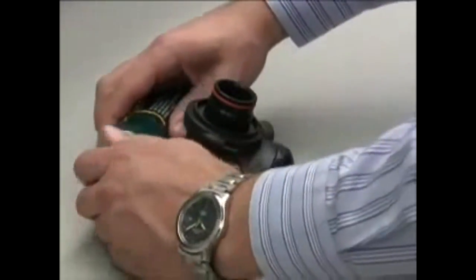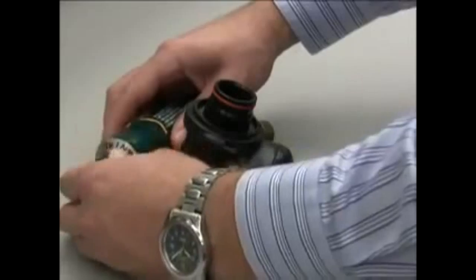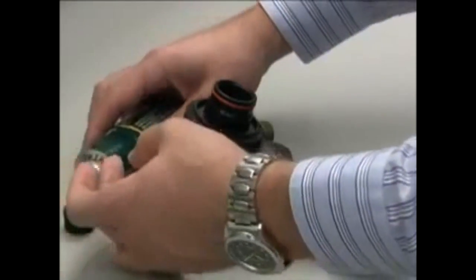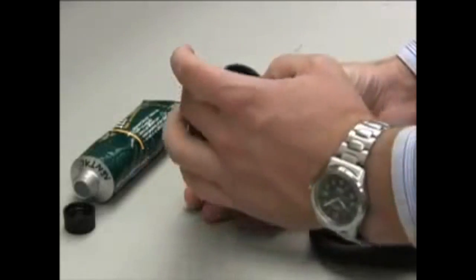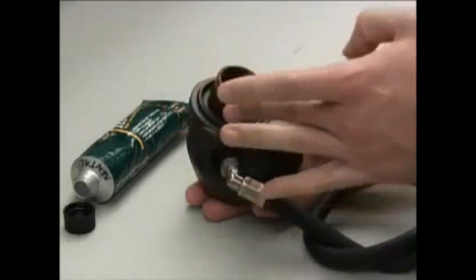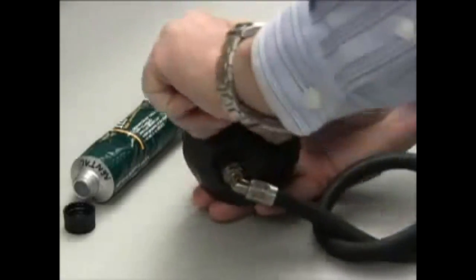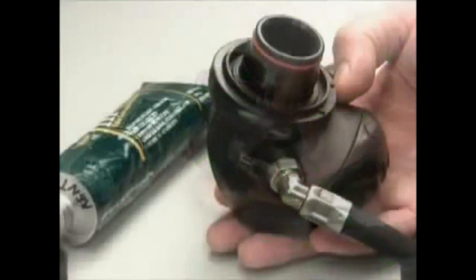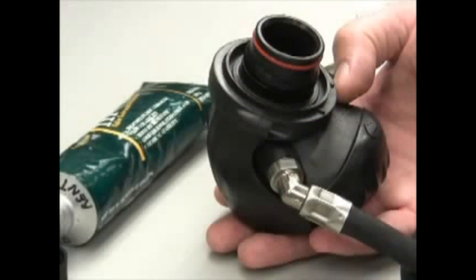Apply a very small amount of Dow Corning 111 lubricant to the O-ring and connector. Work the lubricant into the O-ring and connector as shown. Too much lubricant will attract airborne particles and must be removed. By regularly lubricating the Lung demand valve O-ring will greatly aid in easier connection and locking of the Lung demand valve into the mask.